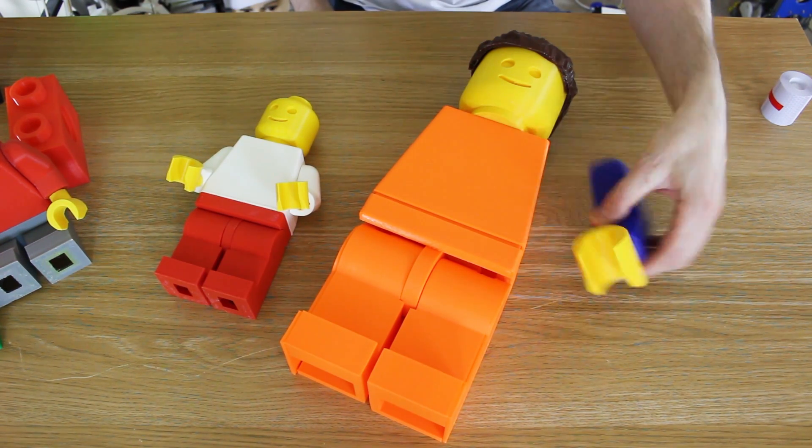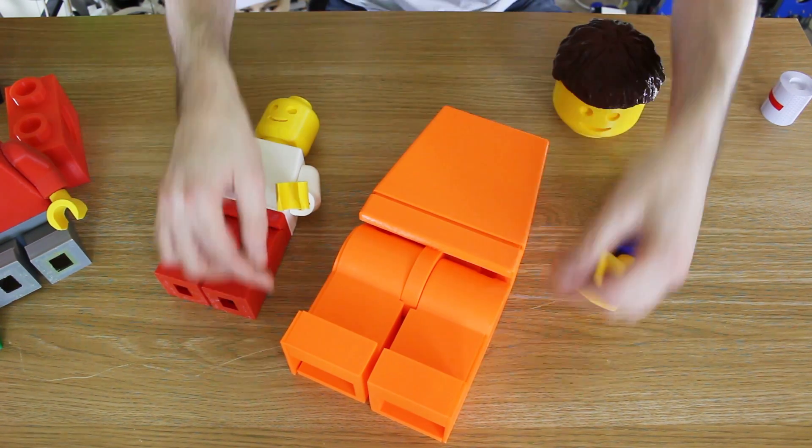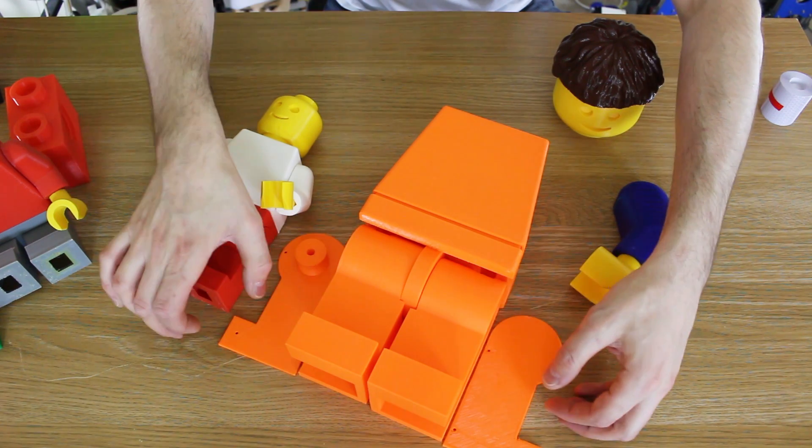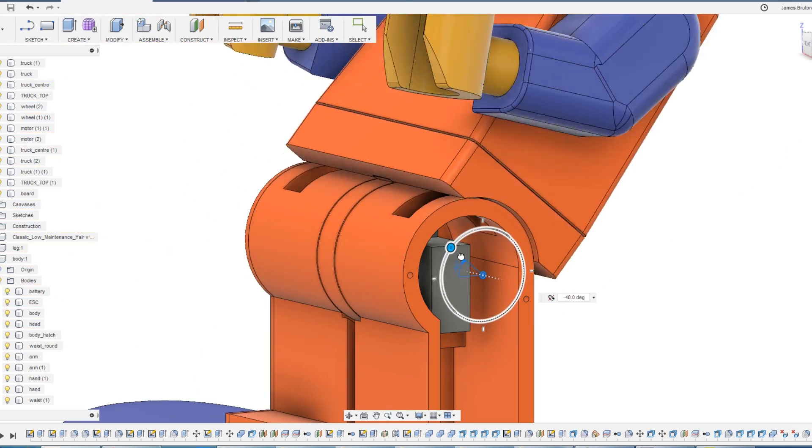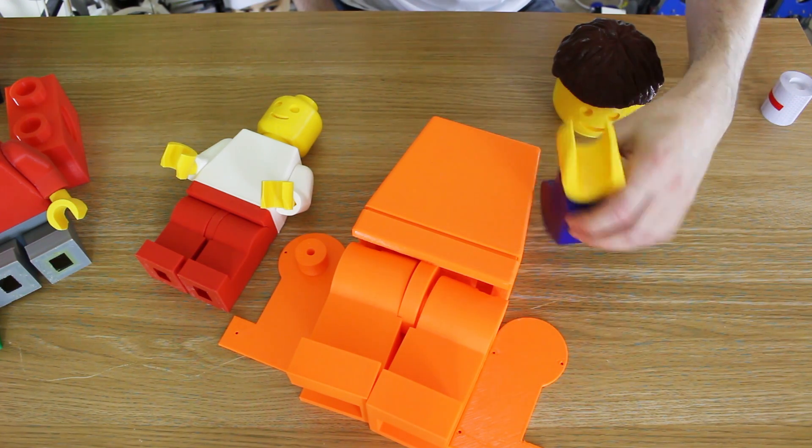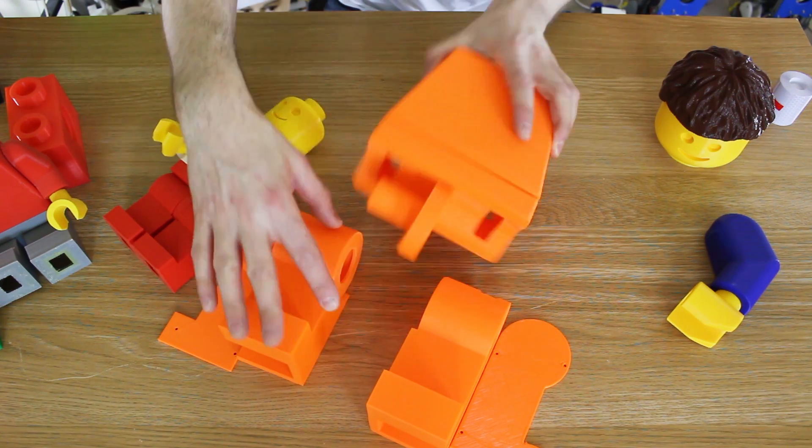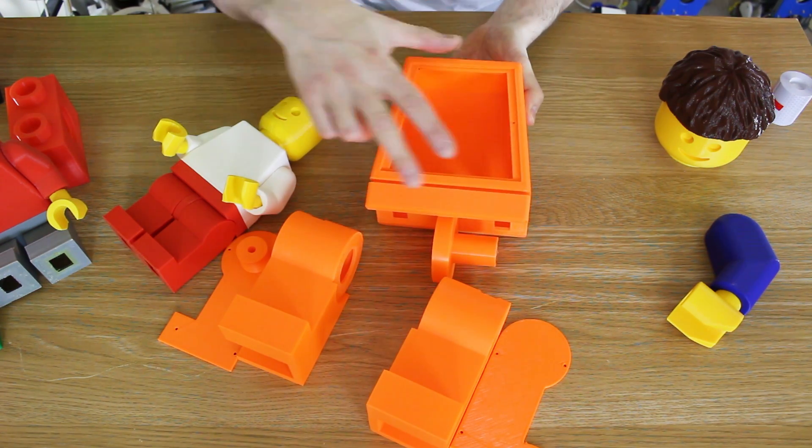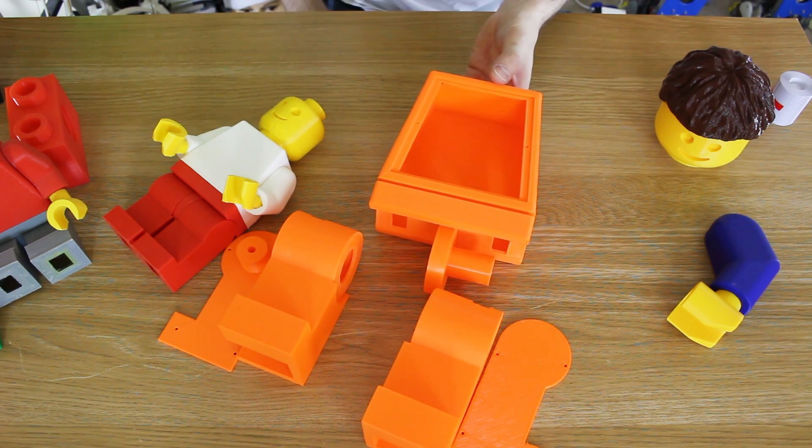He still needs another arm made, but most of him's there. So this minifig's got a few special features. We've got these hatches that come off the side of his legs, and that allows us to put a servo into one side and a special bearing in the other side so that we can animate his waist. In the back of his body, we've got this massive cavity with a hatch so we can put batteries and electronics in.